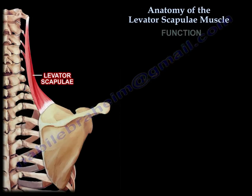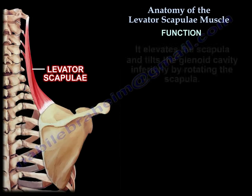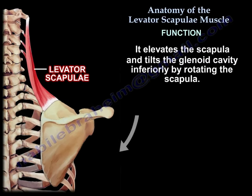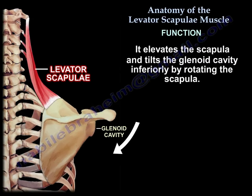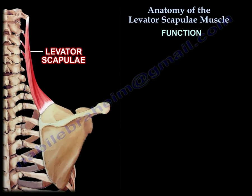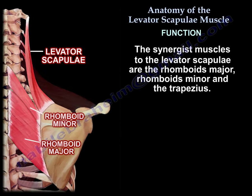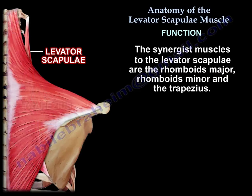Action: it elevates the scapula and tilts its glenoid cavity inferiorly by rotating the scapula. The synergists are the rhomboids and the trapezius.